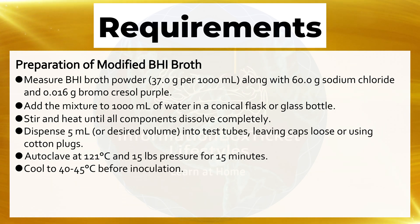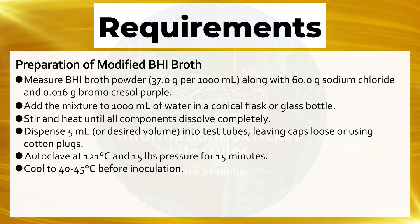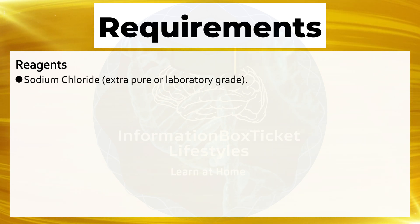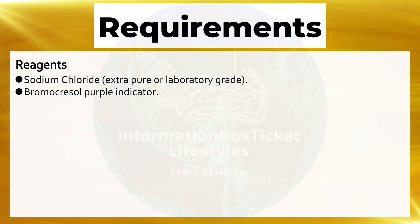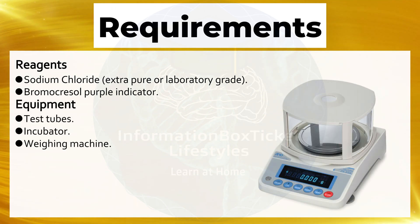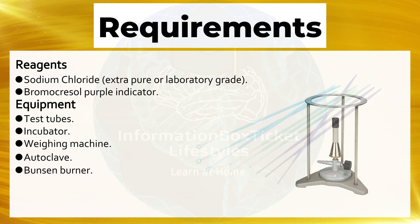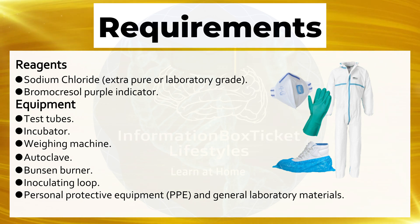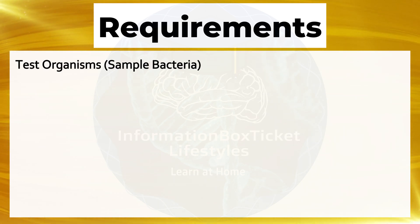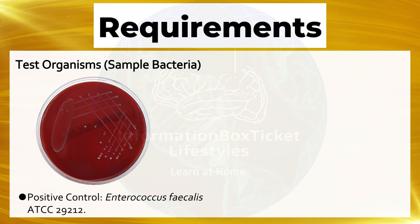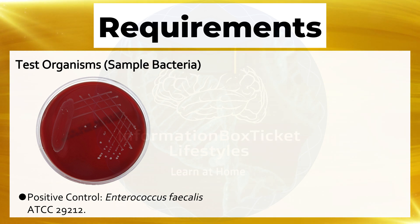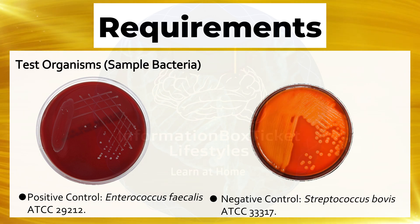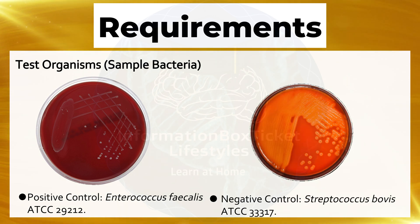Cool to 40–45°C before inoculation. Reagents: sodium chloride (extra pure or laboratory grade) and bromocresol purple indicator. Equipment: test tubes, incubator, weighing machine, autoclave, Bunsen burner, inoculating loop, personal protective equipment (PPE), and general laboratory materials. Test organisms: sample bacteria; positive control: Enterococcus faecalis ATCC 29212; negative control: Streptococcus bovis ATCC 33317.